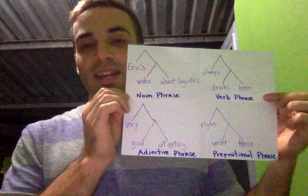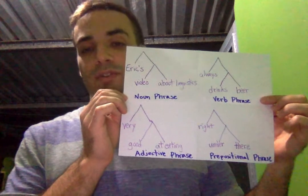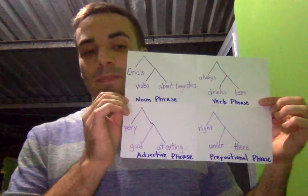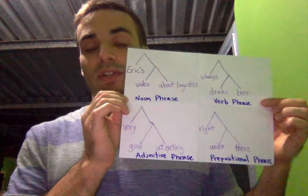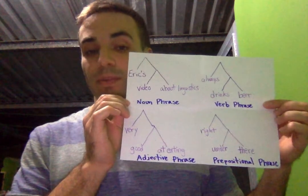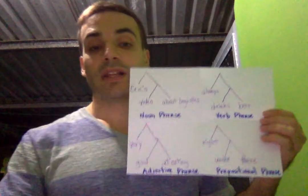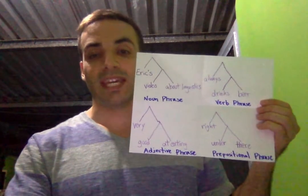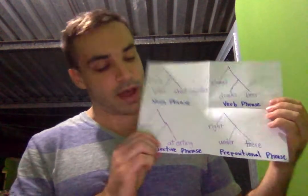You can see that in all phrases there are only ever two branches from one spot. These universal constraints are technically called principles. Languages can differ as to whether or not the key word is in the center or not.